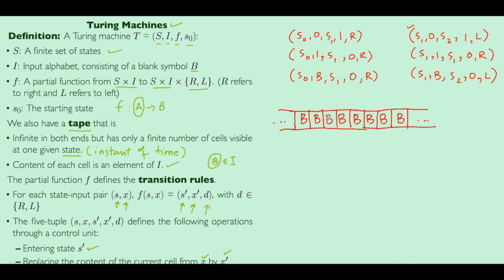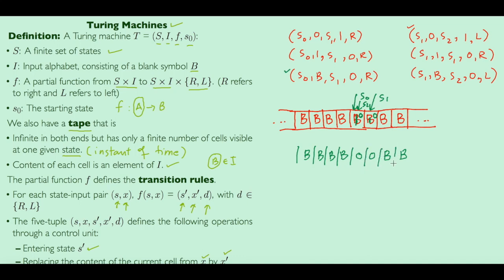Let's see another example. Here all cells are blank, so we can start anywhere — let's say we start at a chosen cell with S0. Our pair is (S0, B): we move right, change the blank to 0, and the next state is S1. Now at S1 with B: we move left, change that cell to 0, and move to state S2. Now we have S2 and 0, but S2 and 0 is not defined in the table, so the machine halts. The final tape is B B B B B 0 0 B B.